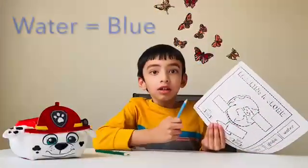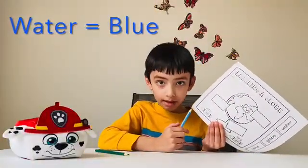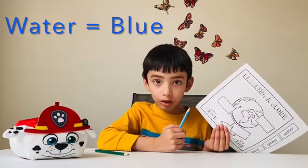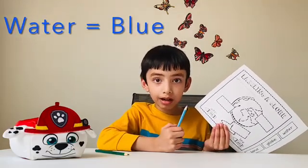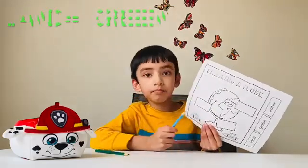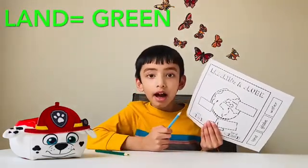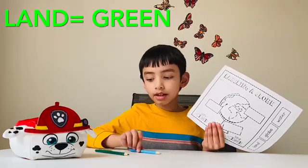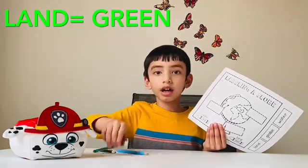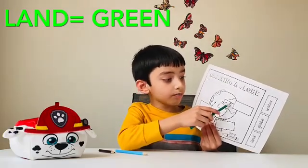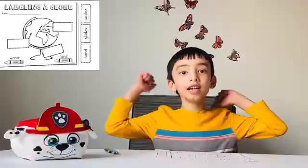The water part is represented by the color blue on the globe, so we'll color the water part in blue. And the land part is represented by the color green, so we'll color it with green. Let's color the globe.